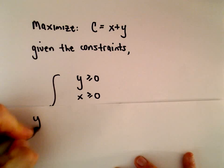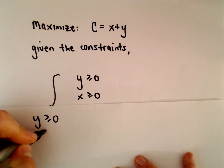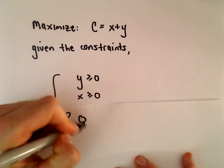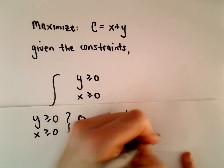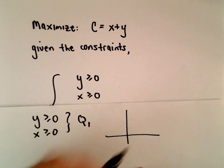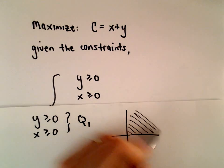Notice the first two constraints, y greater than or equal to 0 and x greater than or equal to 0. That simply means that our feasible region is going to be in the first quadrant, quadrant 1.